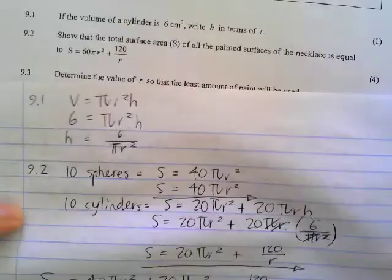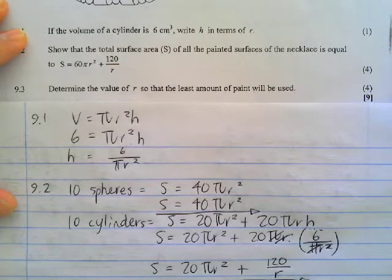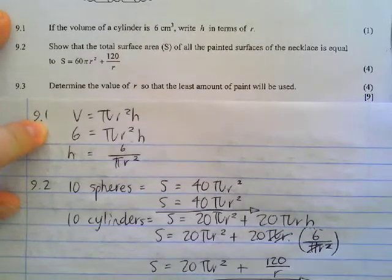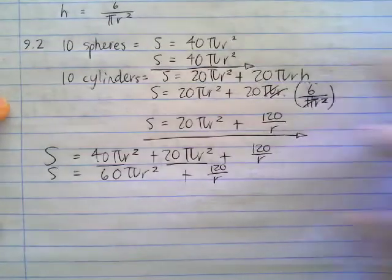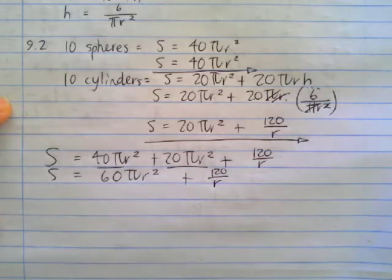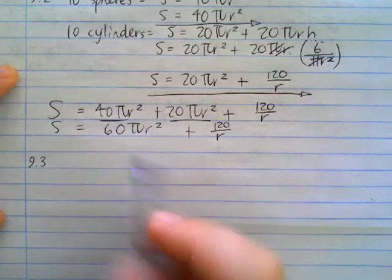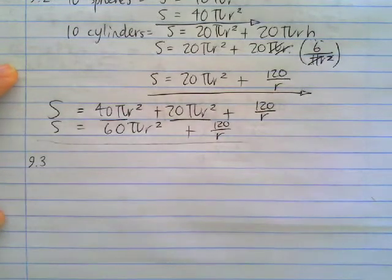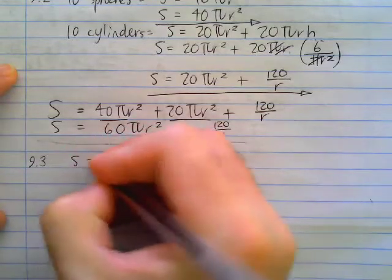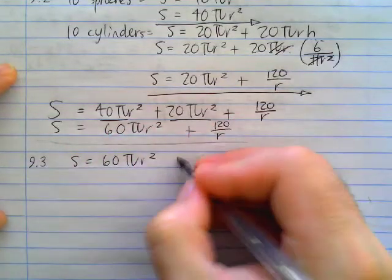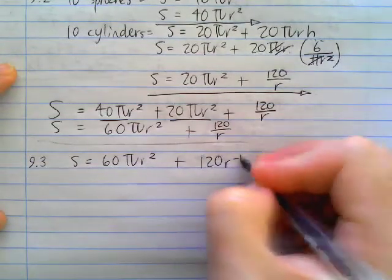Number three says, determine the value of r so that the least amount of paint will be used. Whenever you see questions indicating the least or the maximum or the minimum, you have to use optimization and you have to use the first derivative. So for 9.3, we start off with our formula there and we're going to work out the first derivative. However, we're not quite ready to do it yet. We are going to have to first write out 120 over r as 120 times r to the negative 1.